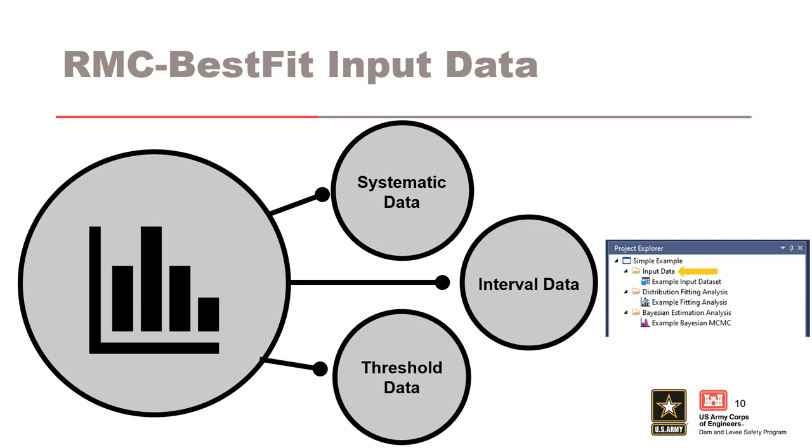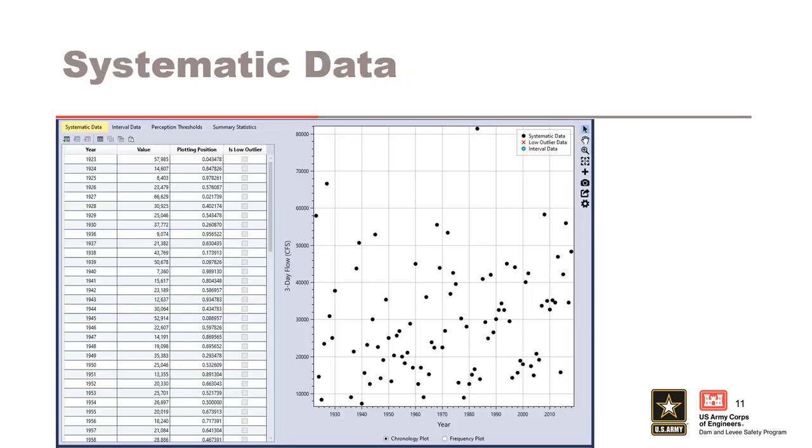In RMC Best Fit, the first project element is the input data. The input data must be entered as block annual maxima, which is assumed to be independent and identically distributed. RMC Best Fit supports three different data types: systematic data, interval data, and perception thresholds. Here you can see where input data is entered in the RMC Best Fit Project Explorer. Let's take a look at each one. Systematic data is exact data that is collected at regular prescribed intervals under a defined protocol. We assume this type of data has no uncertainty. An example of a systematic data set is data collected from a USGS gauge. The figure displays an example of a systematic data set that has been entered into RMC Best Fit.